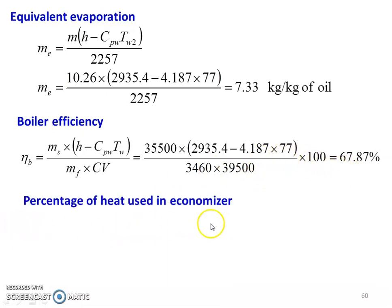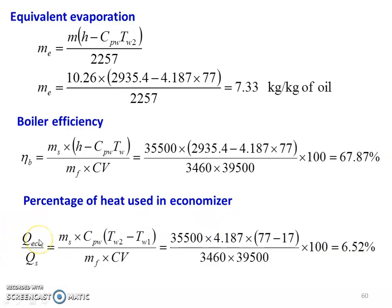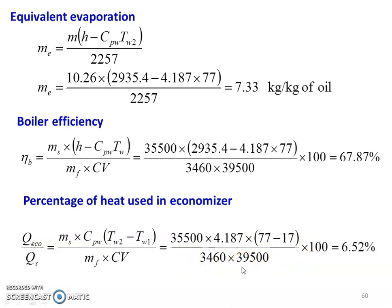Then, percentage of heat utilized in the economizer: heat utilized in the economizer equals mass of water (MS) into Cpw into (Tw2 minus Tw1), where Tw2 is the economizer outlet temperature and Tw1 is the economizer inlet temperature, divided by mass of fuel into calorific value. So, 35,500 into 4.187 into (77 minus 70) divided by 3,460 into 39,500 into 100 equals 6.52%. The answers to the question: equivalent evaporation is 7.33 kg per kg of oil, boiler efficiency is 67.87%, and percentage of heat utilized in the economizer is 6.52%.